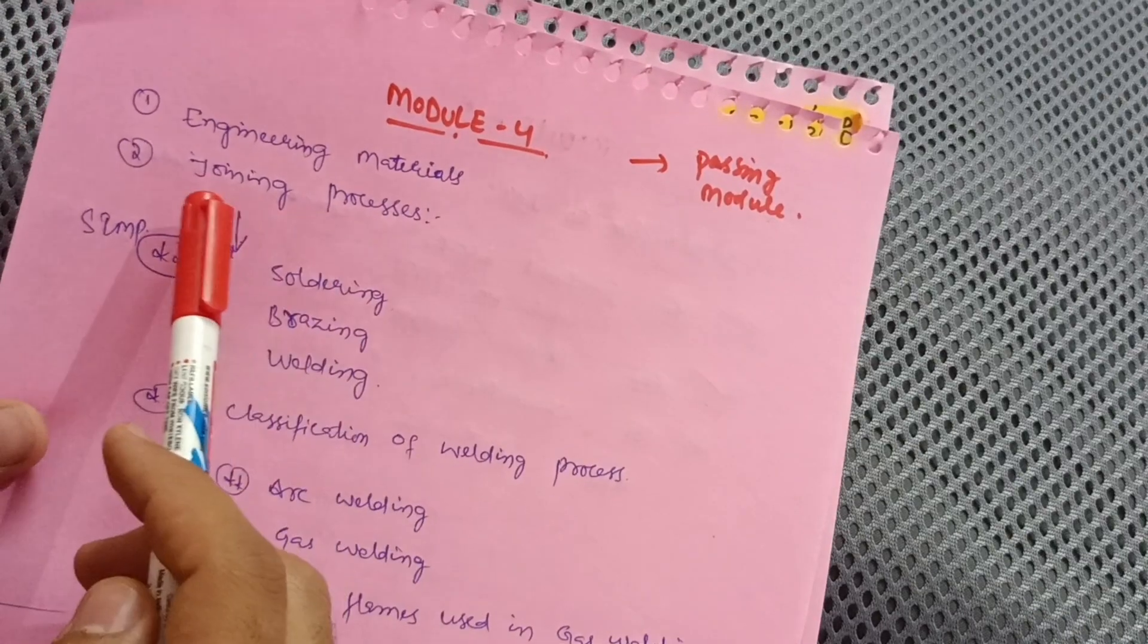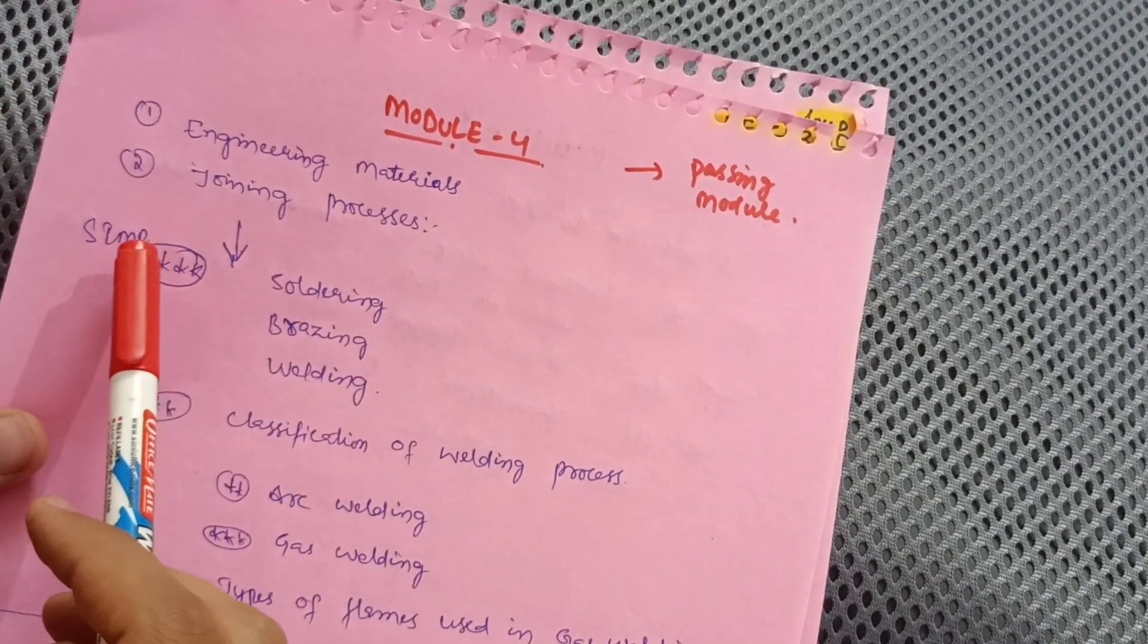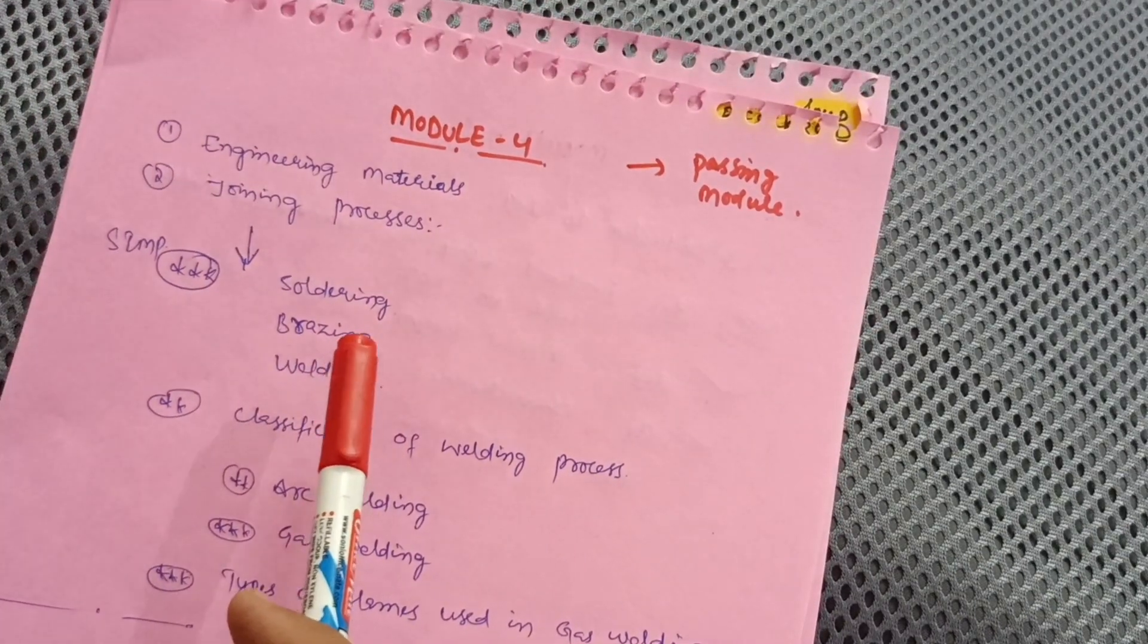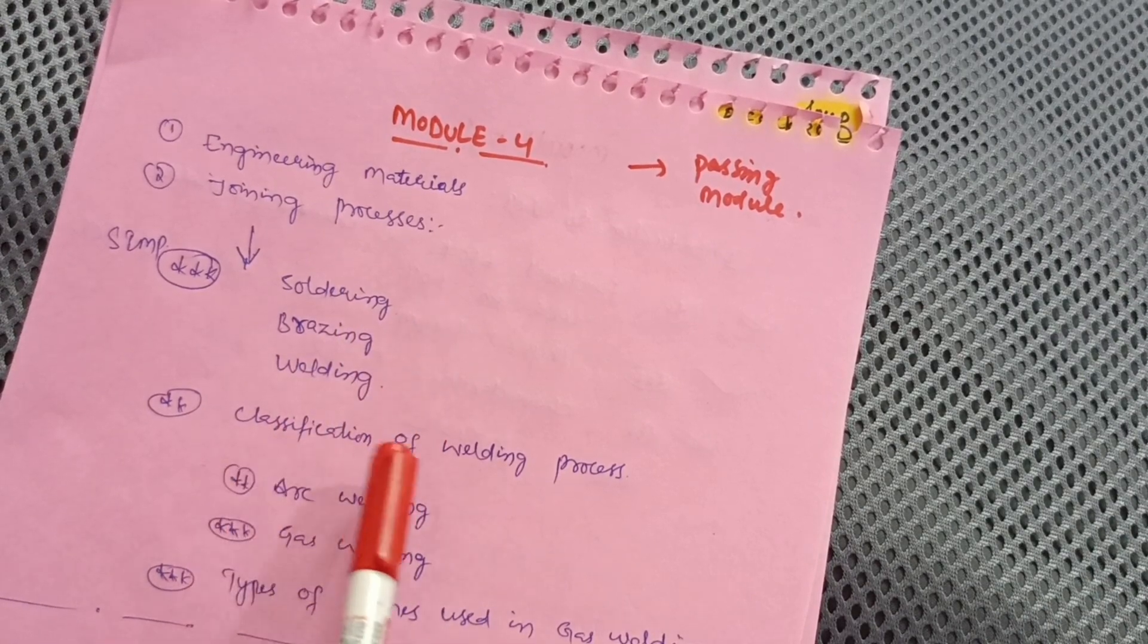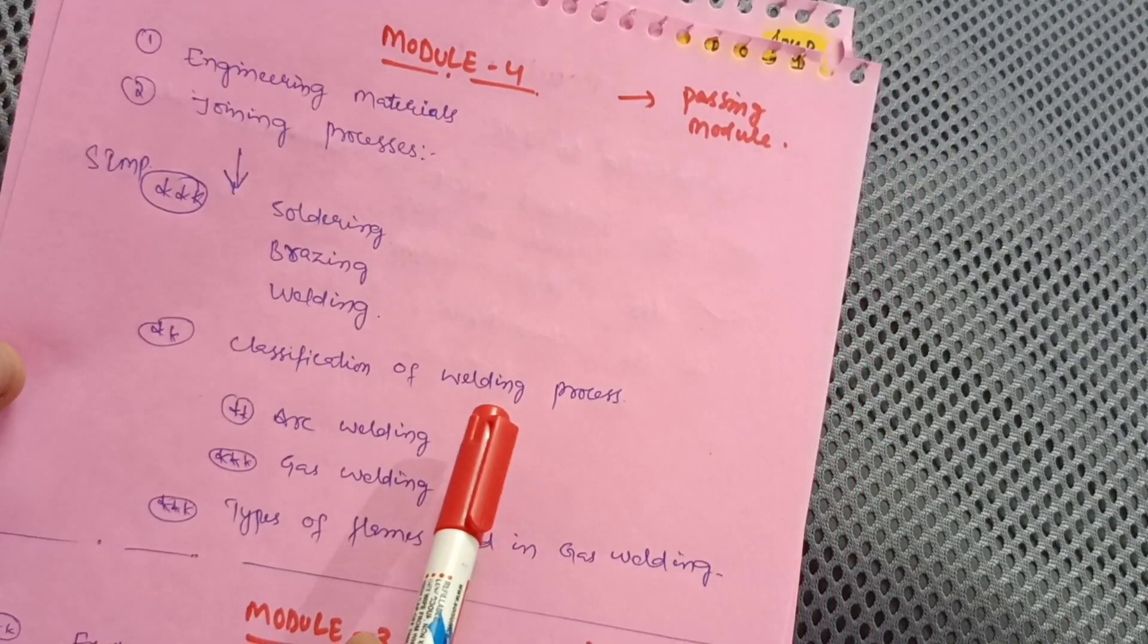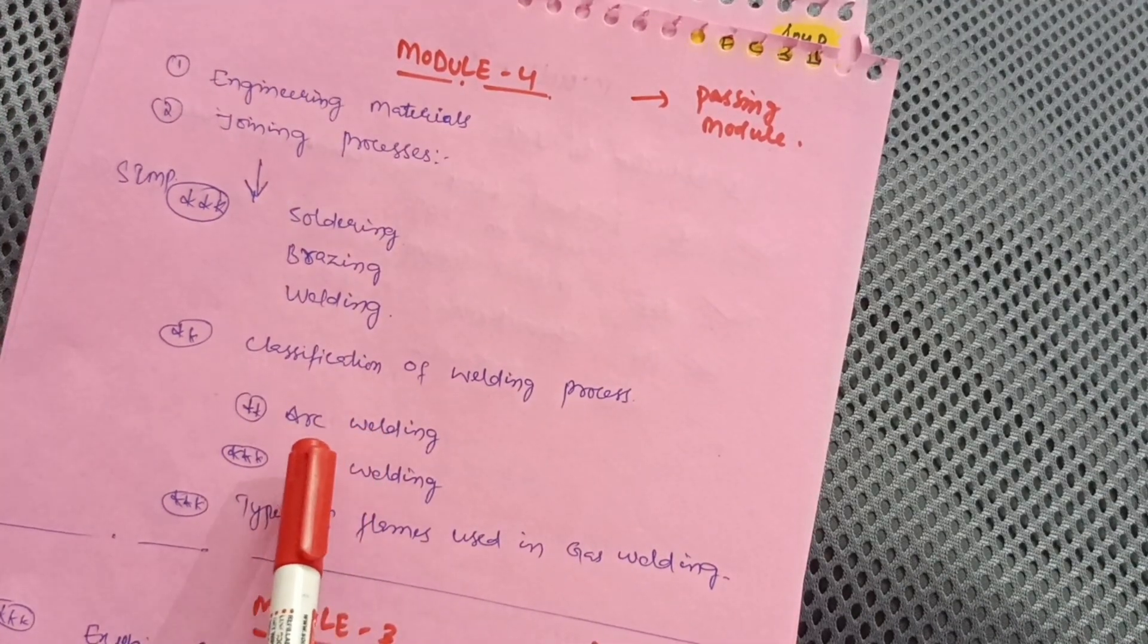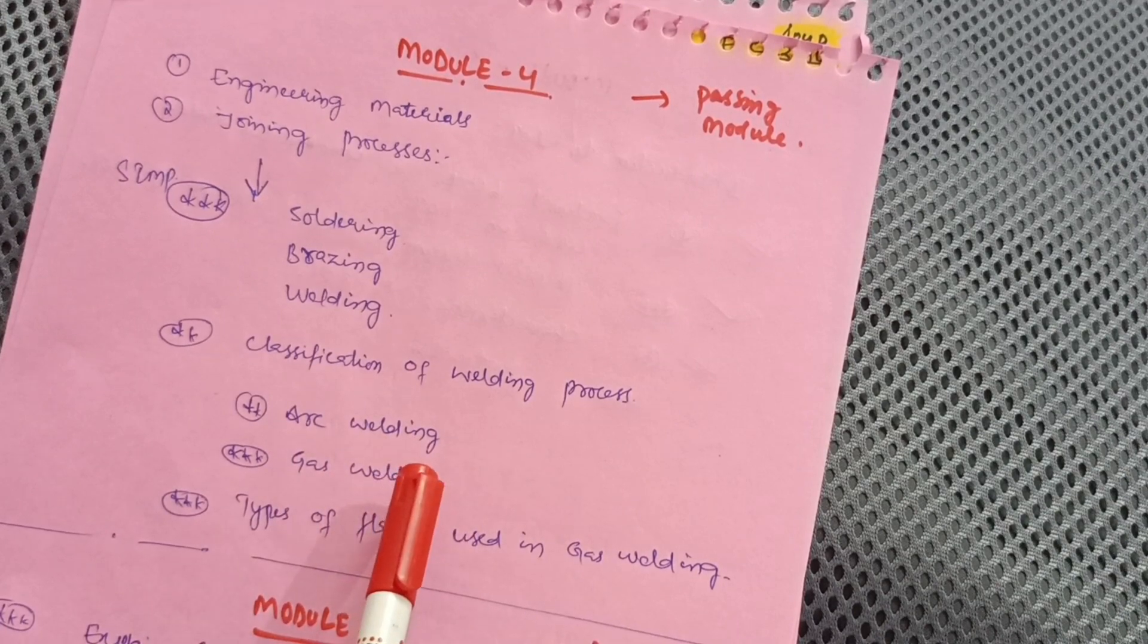Focus on one chapter only: joining processes. Cover some super important questions like soldering, brazing, and welding, and sometimes they will ask you to differentiate between them. Then classification of welding processes, and the 10 or 7 marks question on arc welding with neat sketch and gas welding with neat sketch.